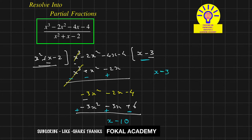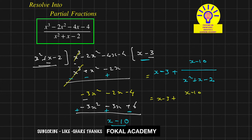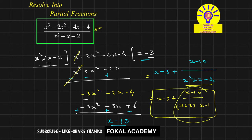The expression can now be written as x minus 3 plus (x minus 10) divided by (x squared plus x minus 2). The denominator factors as (x plus 2)(x minus 1). Since the numerator degree is 1 and denominator degree is 2, we can now apply partial fractions to the fractional part.